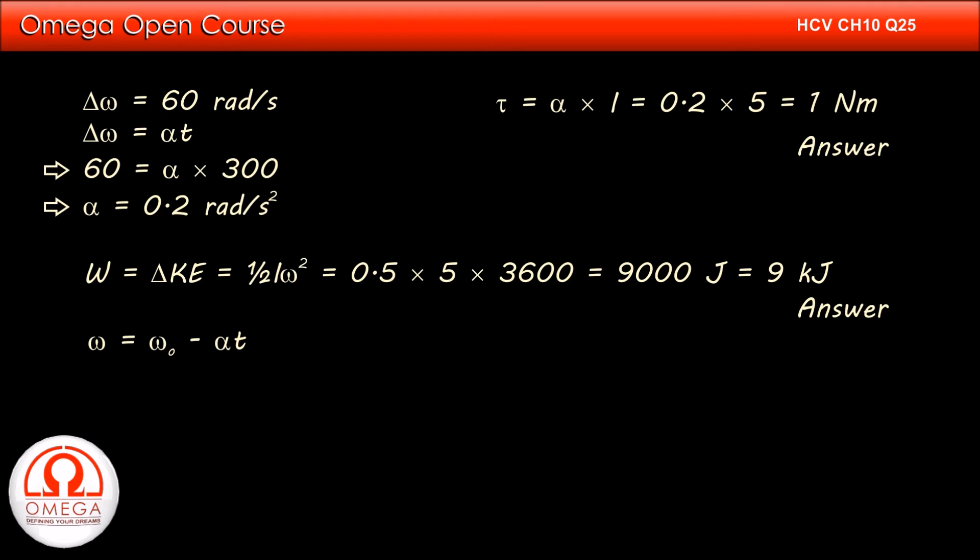The final angular speed is given by initial angular speed minus angular acceleration into time. Therefore, the speed of the wheel 1 minute before stopping, i.e. 4 minutes or 240 seconds after the start, is 60 - 0.2 × 240 = 12 radians per second.